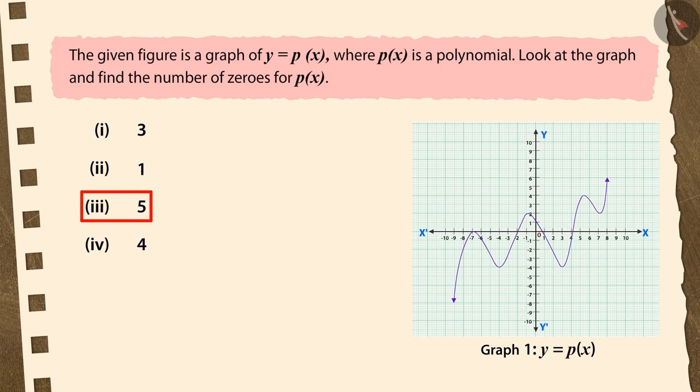If you have chosen the third option, that too is not correct. Along with the points of intersection on the x-axis, you have also counted the point of intersection on the y-axis. Recall that the number of zeros of a polynomial is equal to the number of points intersecting the x-axis of the graph of that polynomial.